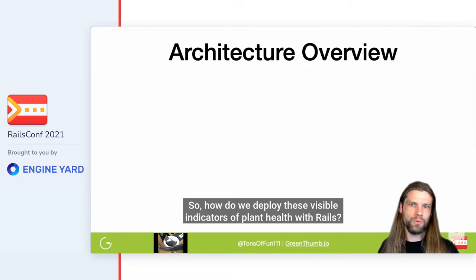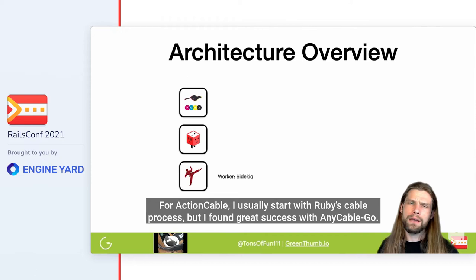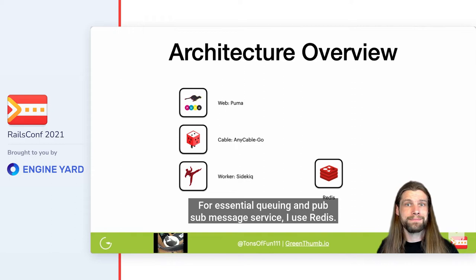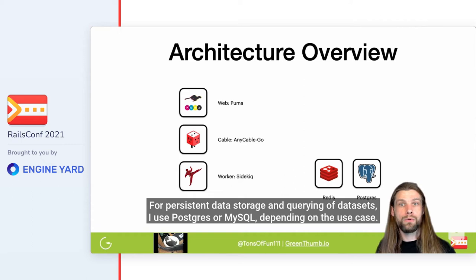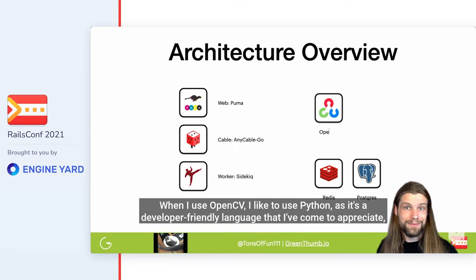So how do we deploy these visible indicators of plant health with Rails? There are common component services that I prefer to run for all of my Rails apps. For workers doing background jobs, I like to use Sidekiq. For Action Cable, I usually start with Ruby's cable process but have found great success with AnyCable Go. For web workers, I use Puma. For essential queuing and pub/sub messaging, I use Redis. For persistent data storage and querying, I use Postgres or MySQL depending on the use case — I really appreciate Postgres's PostGIS extension for geo-indexing and geo-querying.